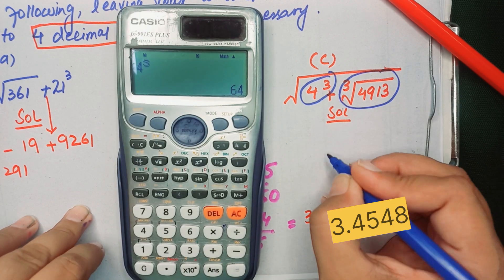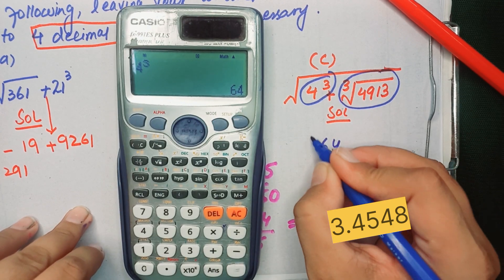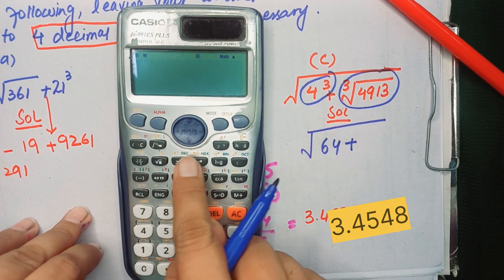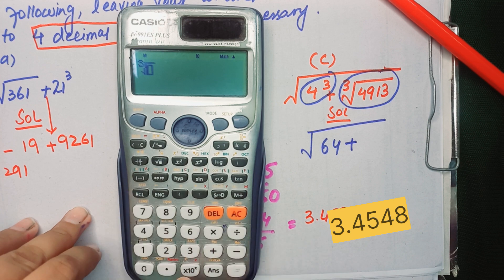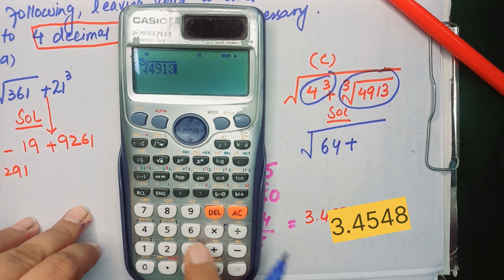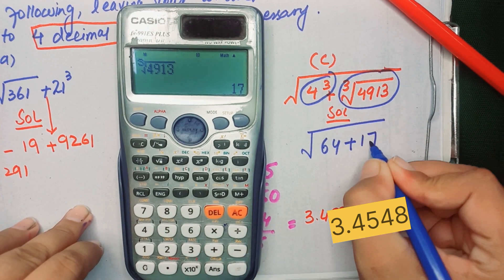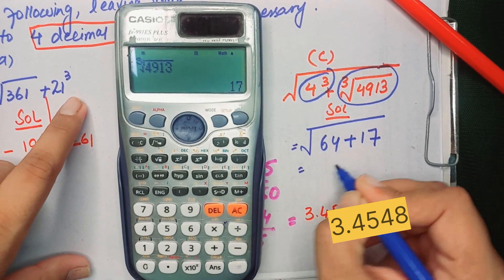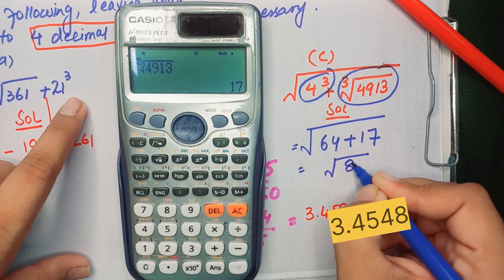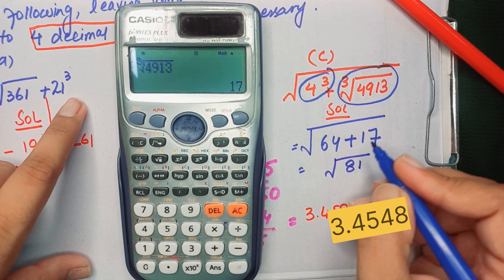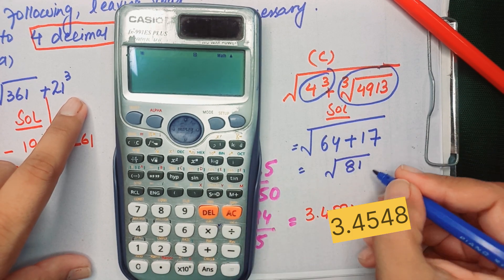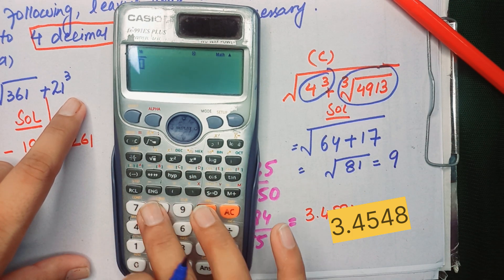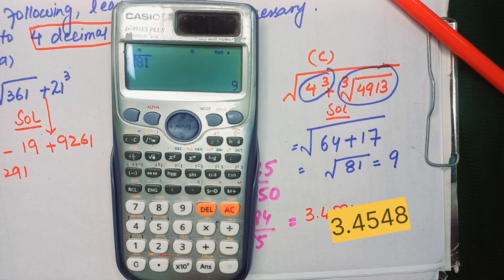Now you will find the cube root: shift and the cube root and 4913, so you will get 17. Now you will add: it will get 81. And you know that 81 square root is easy. 81 square root is 9, or you can find it with the calculator.